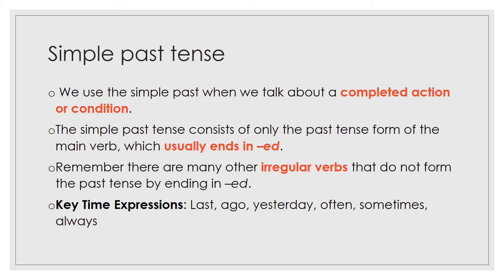Simple past tense. We use the simple past tense when we talk about a completed action or condition. It usually consists of only the past tense form of the main verb, which usually ends in ED. Remember that there are many irregular verbs that do not form the past tense by ending in ED. Key time expressions for simple past tense include last, ago, yesterday, often, sometimes, and always.